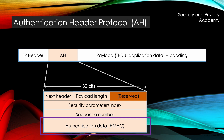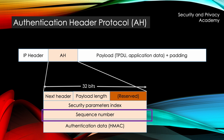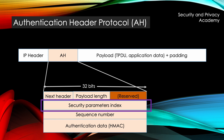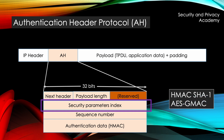Furthermore, the AH header holds the optional sequence number, which is used to prevent replay attacks. Next, the Security Parameter Index SPI points to the concrete cryptographic parameters used in this particular connection. It points to a security association that tells the protocol to use either HMAC SHA-1 or AES-GMAC as Message Authentication Code algorithms.